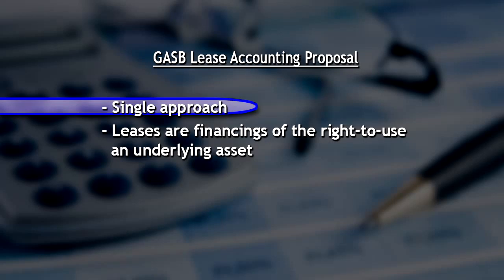Currently we have criteria that identify whether a lease should be in the operating or the capital category. The single approach that the GASB is proposing in this exposure draft is a little different from the private sector standard the FASB has come out with. Right now we have both capital leases and operating leases, but the GASB kind of got away from that and said they're going to treat all leases pretty much the same.